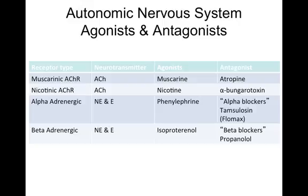My hometown had Tony Gwynn, a famous baseball player who died recently from oral cancer from using chew his whole career. They even put fiberglass in chewing tobacco to break the skin barrier so you can absorb the nicotine better. Now, we also have alpha and beta agonists and antagonists — don't memorize these drugs, but they're here for your information.